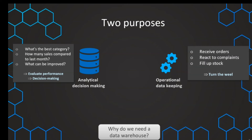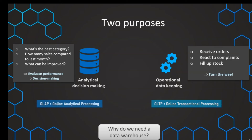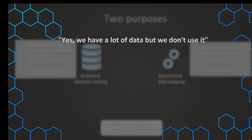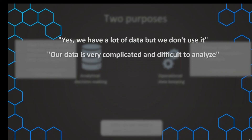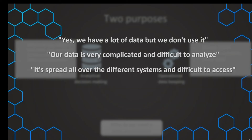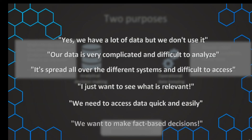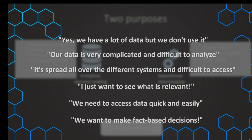This operational data keeping is also referred to as OLTP, which stands for Online Transactional Processing, and analytical processing is referred to as OLAP. The lack of a data warehouse in a company is usually showcased by statements like: 'we have a lot of data but we can't really use it,' or 'it's very difficult to analyze because it's spread across different systems,' or 'I just want to see what is relevant and have this data accessible quickly and easily, so we can finally make fact-based decisions and stop arguing about the numbers.' These statements all underline the need — and perhaps the lack — of a data warehouse.